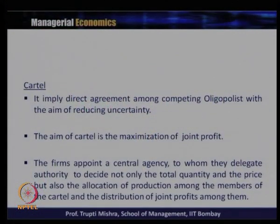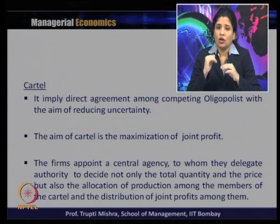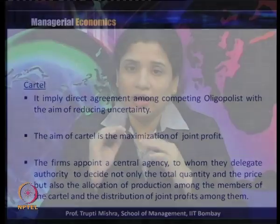A cartel is a direct agreement among competing oligopolists with the aim of reducing uncertainty. The optimization problem for the oligopolist is to reduce uncertainty. The aim of a cartel is to maximize joint profit. To achieve this, they appoint a central agency and delegate authority to decide not only the total quantity and price, but also the allocation of production among members and the distribution of joint profit among them.